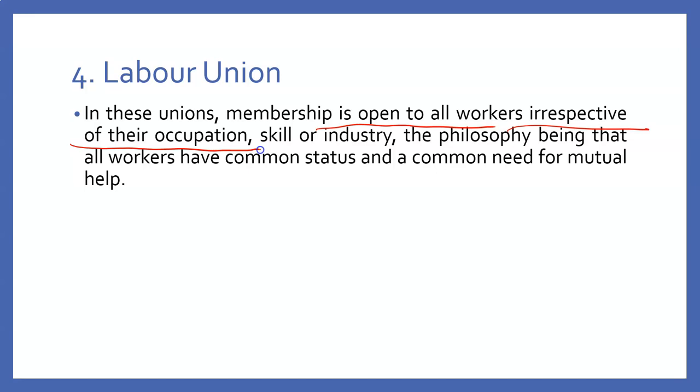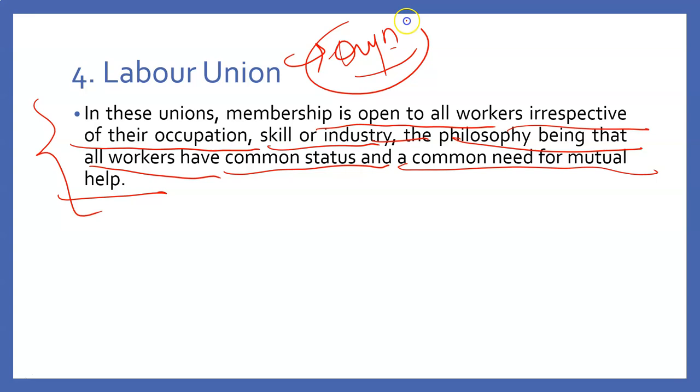The next one is called labor union. In this union, membership is open to all workers irrespective of their occupation, skill, or industry. The philosophy is that all workers have common status and a common need for mutual help. Generally, within any single organization, unions are called labor unions. For example, if there is a company called Vardman Textiles and many workers are working there, if they form a union, that union is called a labor union. The most important thing is that workers have a common status and these unions are formed for a common need.